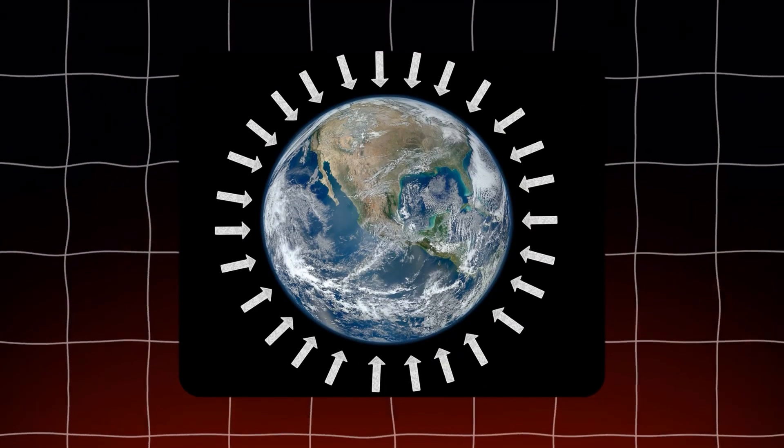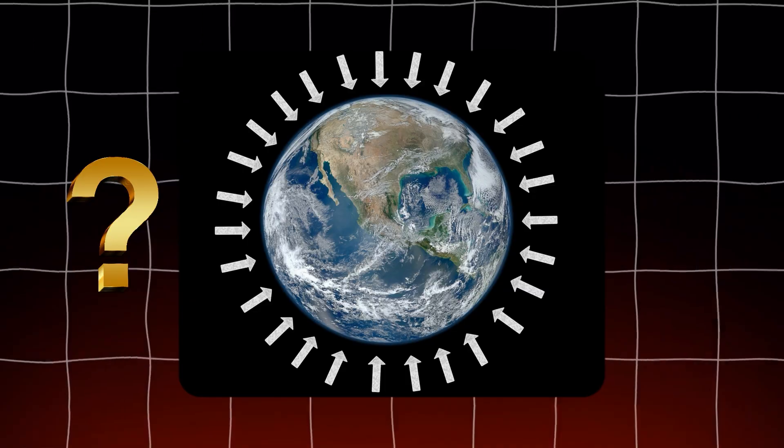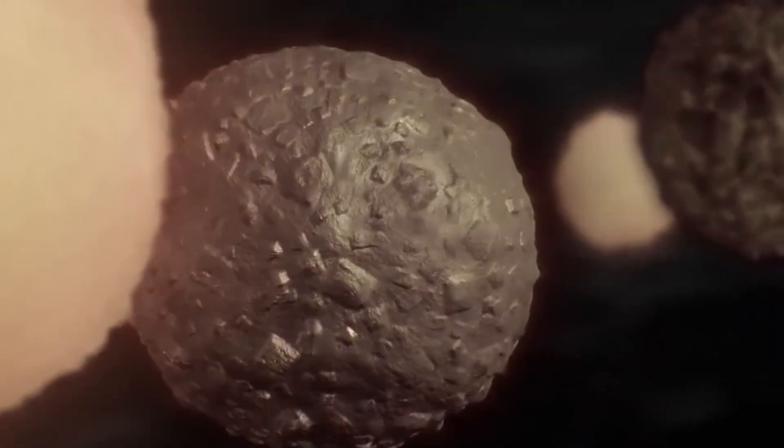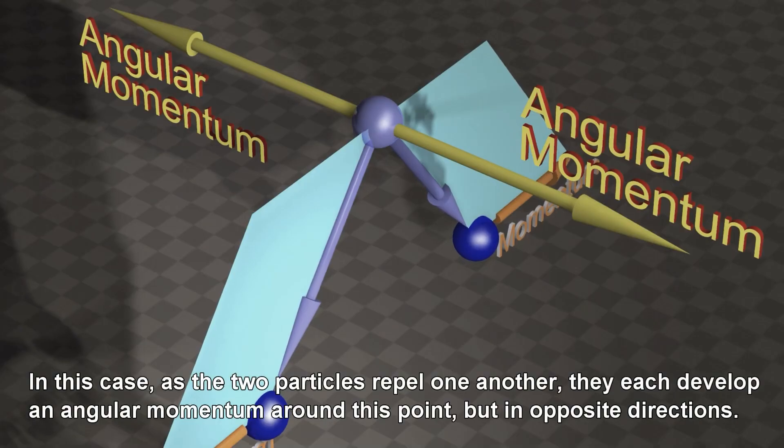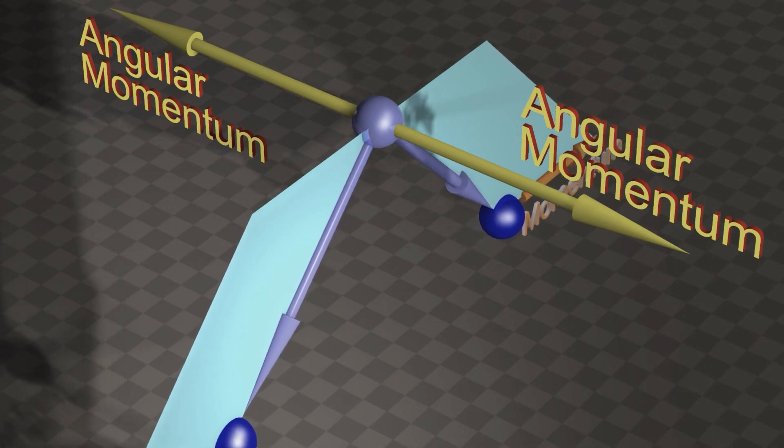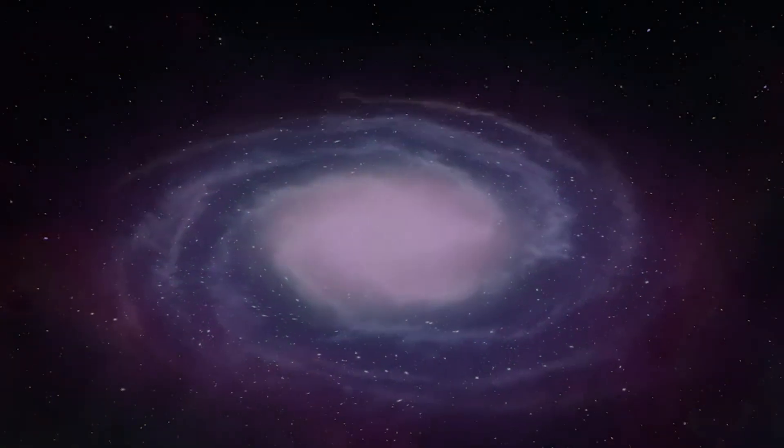One might wonder why this alignment happens at all, given that gravity works equally in all directions. You would expect the orbits to be randomly oriented, leading to a chaotic swarm of planets. However, the initial conditions of the collapsing gas cloud and the conservation of angular momentum guide the formation of a flat disk. This process is akin to a cosmic pancake forming, where the material flattens out as it spins.